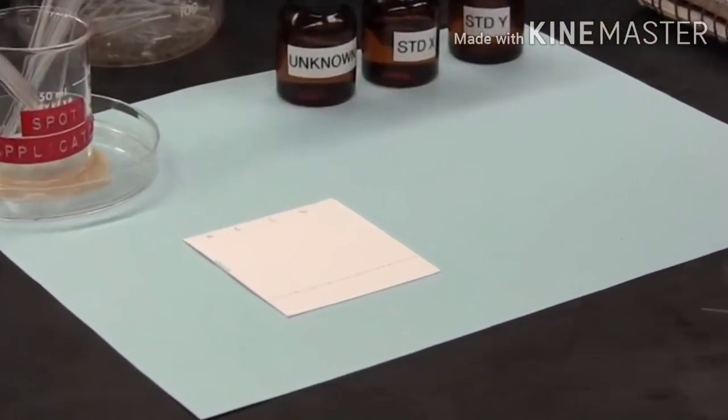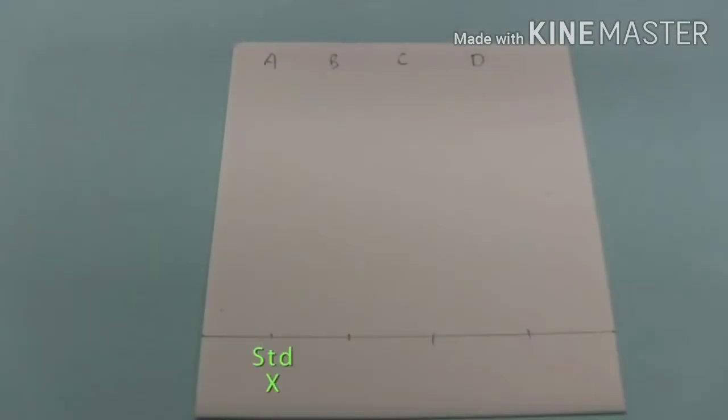And so with a clean capillary applicator, we apply a spot of the unknown in lane D. So looking at the spotted plate, we have standard X in lane A, standard Y in lane B. In lane C, we have a mixture of standards X and Y. And in lane D, we have our unknown, which is either X or Y, or a mixture of both. Let's find out the composition of the unknown.